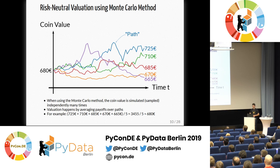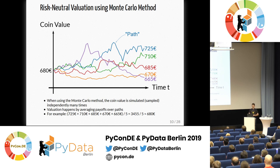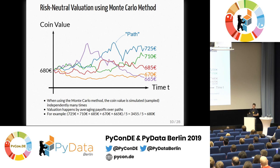Let's take our model from before — each of these paths. Valuation works like this: you take the value at the very right of each path, add them all up, divide by the number of paths, calculate the average, and what you get out is the price. Of course it's a simulation-based model, so everything has a margin and it won't be perfectly exact, but the more paths you have, the better you get. That's how valuation works in principle.